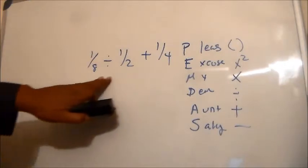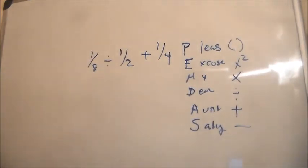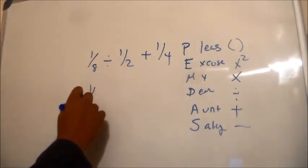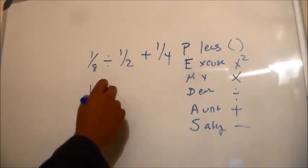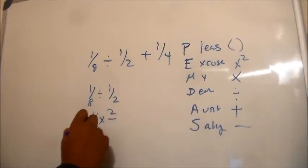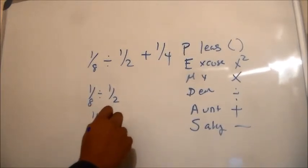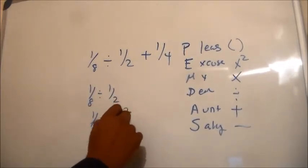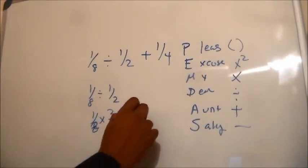So 1/8 divided by 1/2, which is really 1/8 multiplied by 2/1, which is 2/8, which reduces to 1/4.